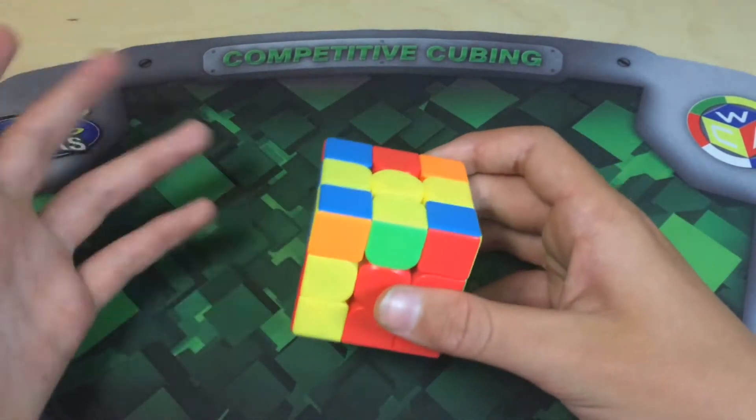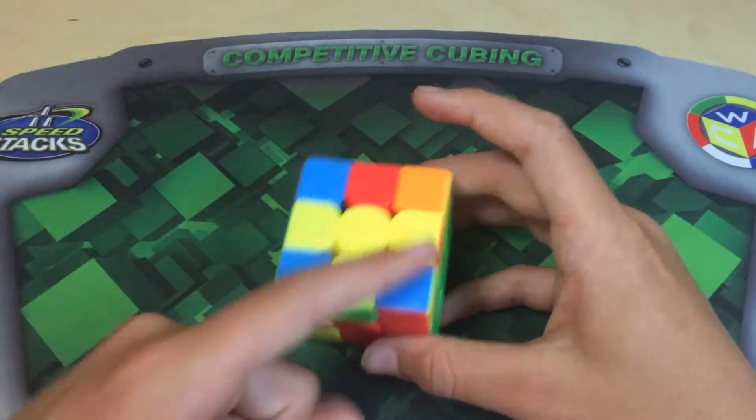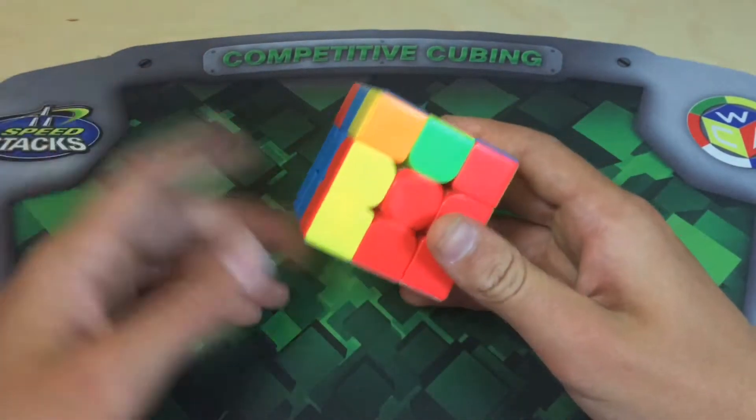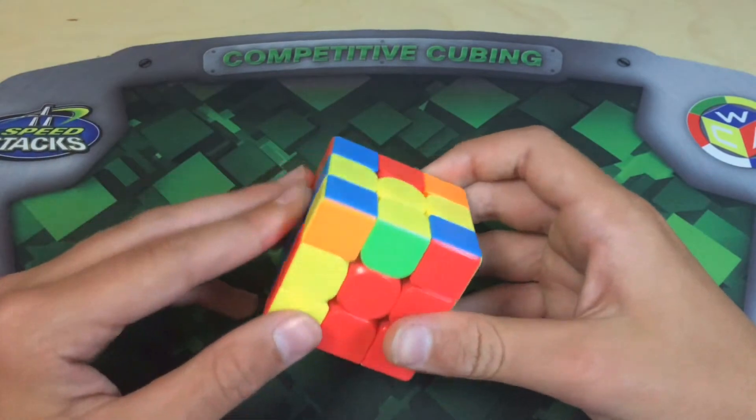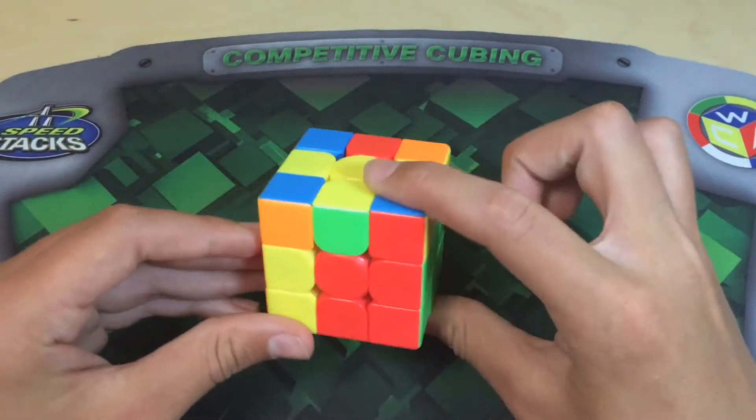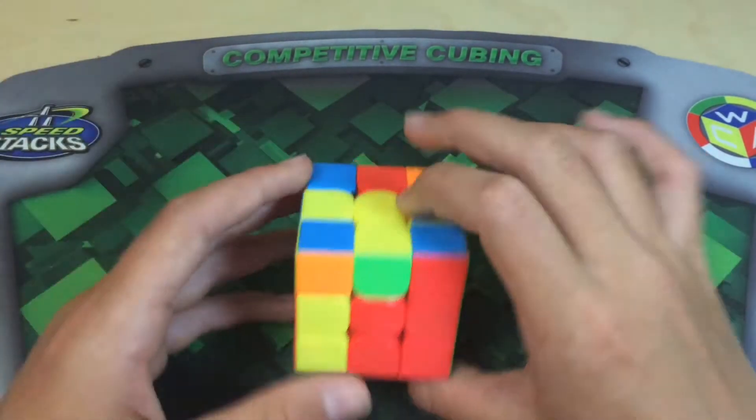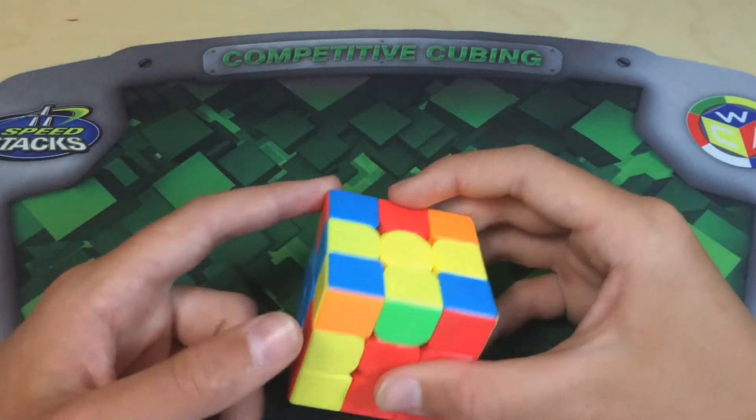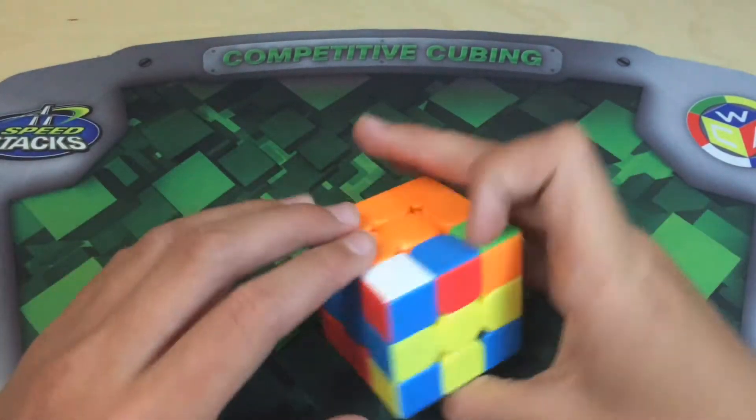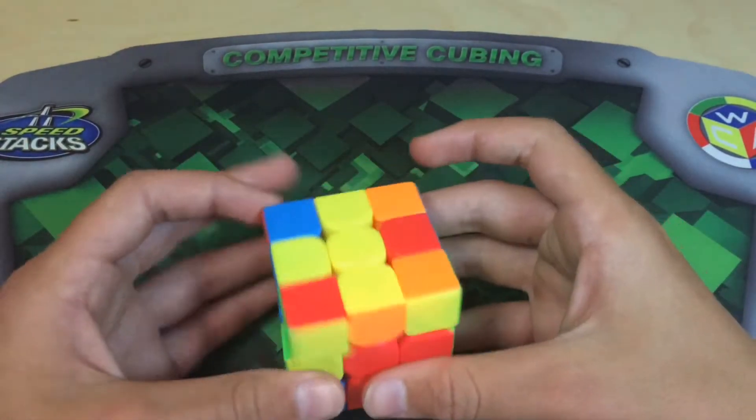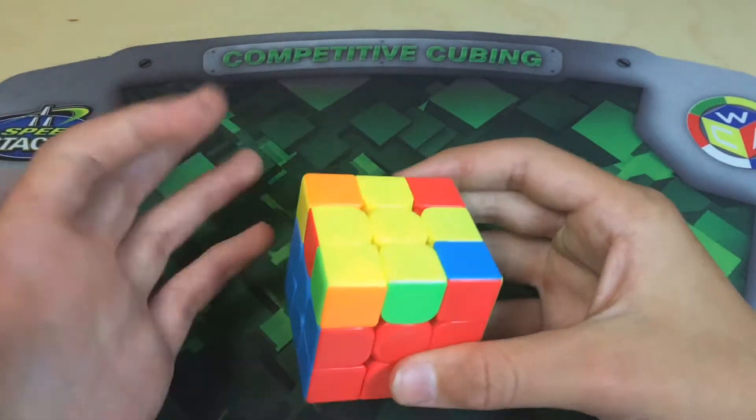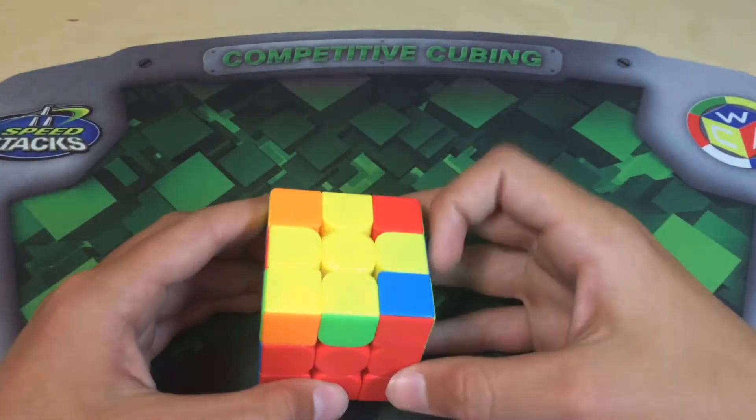So the first case we'll cover is when you have four good edges. So I have four good edges here. And what you want to do for this one is just preserve all those edges by not using any F or B moves in your solution or rotating. So you want to solve it rotationless without using F or B moves. So this one, it's really simple. You pair them up like that and insert them. And I didn't use any F or B moves and that kept all my edges good.